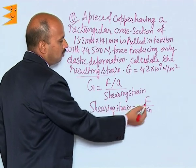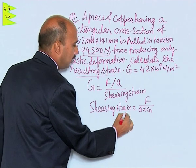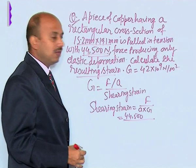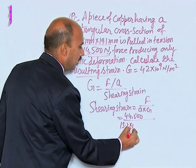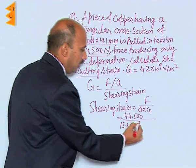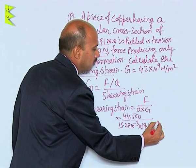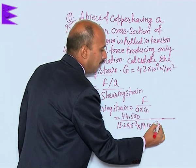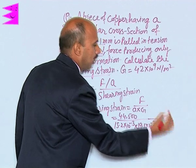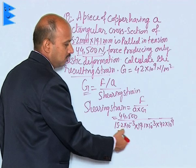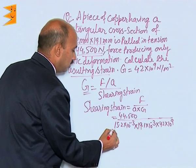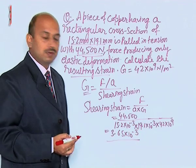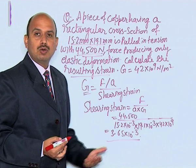Substituting the values: F = 44500 N, A = 15.2 × 10⁻³ m × 15.2 × 10⁻³ m (the cross-sectional area from the given dimensions), and G = 42 × 10⁹. On solving, you get shearing strain = 3.65 × 10⁻³. There is no unit because it is the ratio of two quantities with the same dimensions.